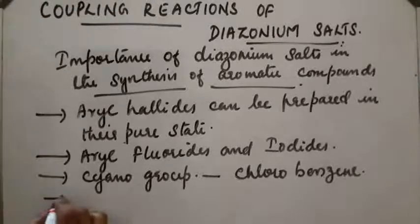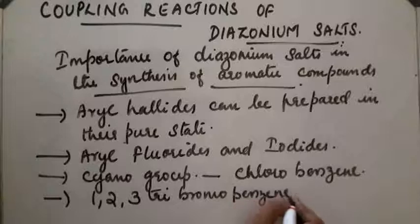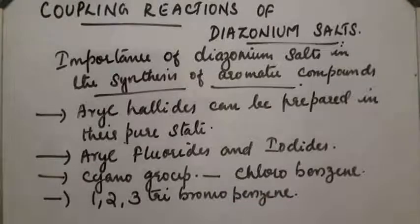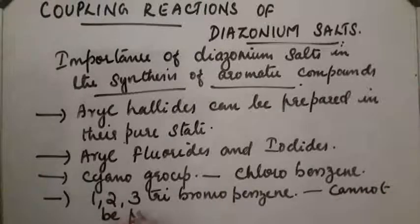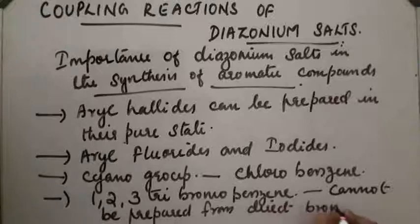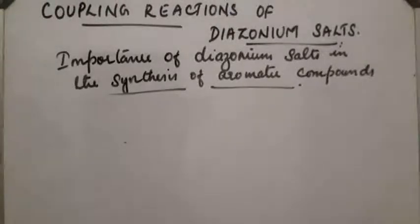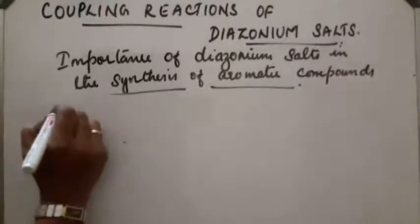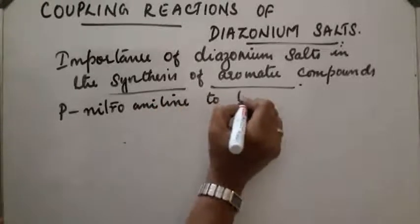Another important point: 1,2,3-tribromobenzene cannot be prepared in its pure state by direct bromination of benzene. So, diazonium salt must be used as intermediate. We have to prepare 1,2,3-tribromobenzene from para-nitroaniline with the help of diazonium salt as intermediate.